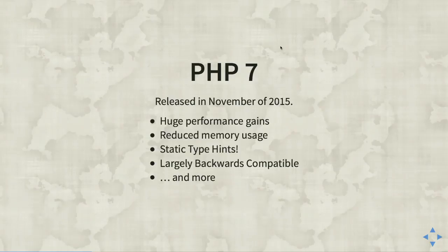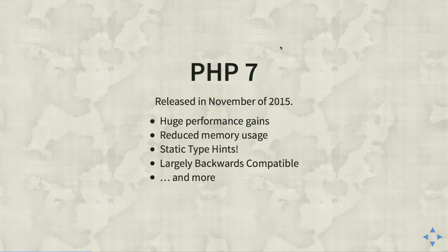There's no PHP 6 because there was no PHP 6. When version 7 was coming out, the community voted on the next number. PHP 6 was going to add Unicode support for strings, but that turned out to be a big hairy beast. A lot of the other improvements that were worked on became PHP 5.3, 5.4, and 5.6 features that were backported.